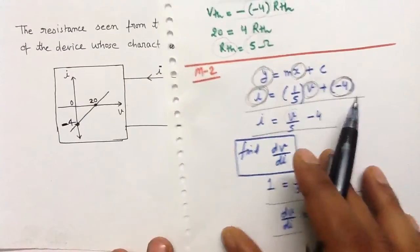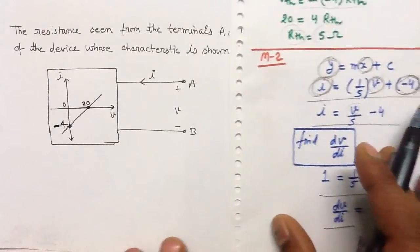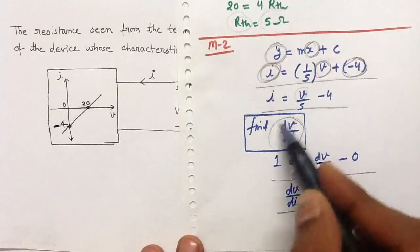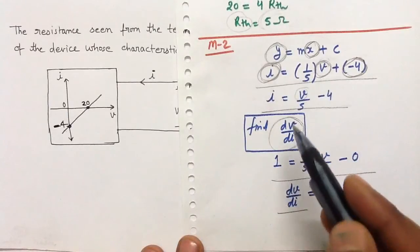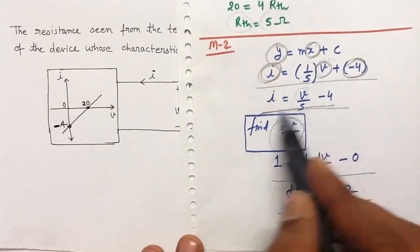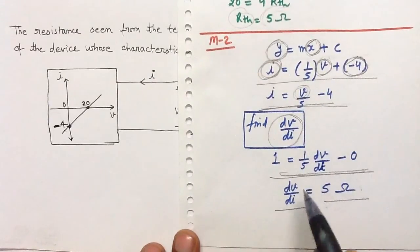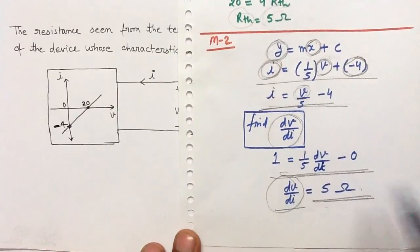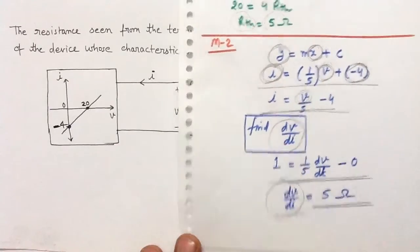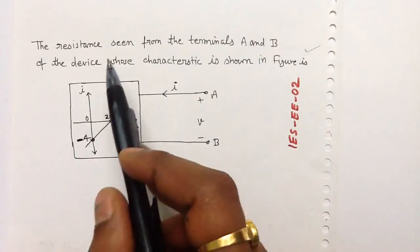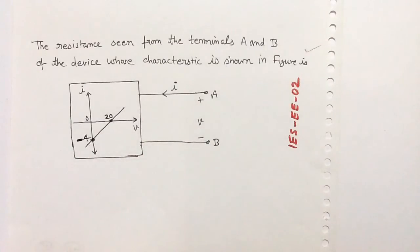To find out the resistance seen from the terminals A and B, use the formula dV upon dI. After differentiating the voltage with respect to current you will get this equation, and dV upon dI will be 5 ohm. So 5 ohm will be the resistance seen from the terminals A and B.